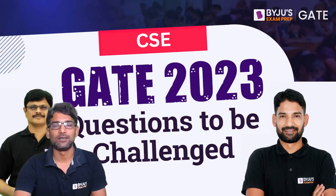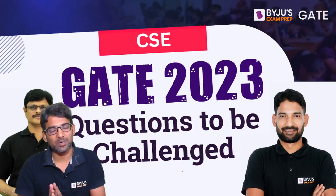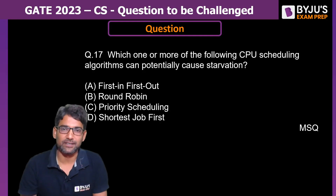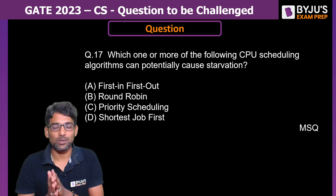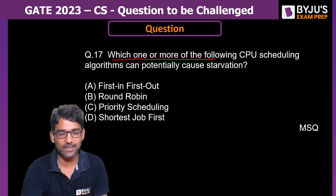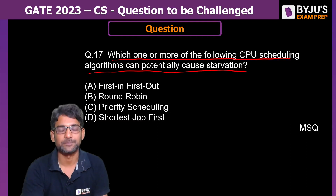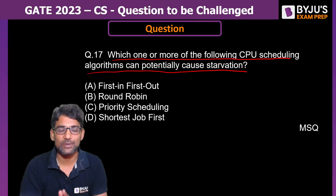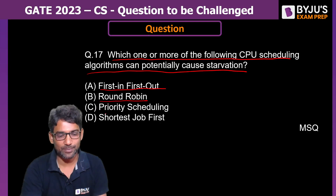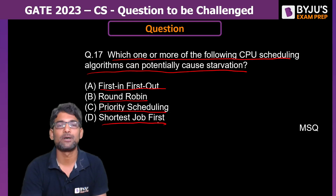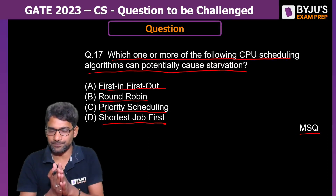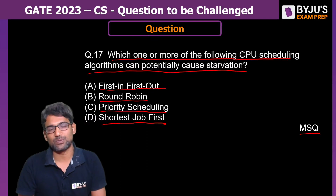Let us see what is the question we can challenge in the GATE 2023 CSE paper. The question is: which one or more of the following CPU scheduling algorithms can potentially cause starvation? The options given are: First In First Out (FIFO), Round Robin, Priority Scheduling, and Shortest Job First. It is an MSQ question.